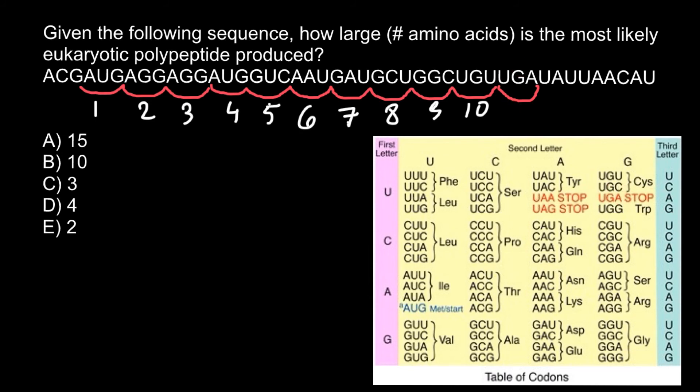As you see, the correct answer would be answer B. The sequence can produce a polypeptide chain made of 10 amino acids.